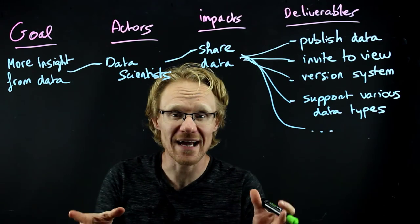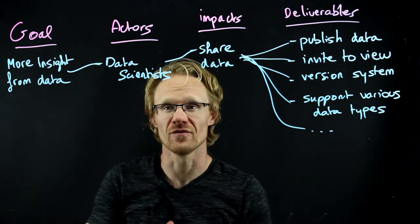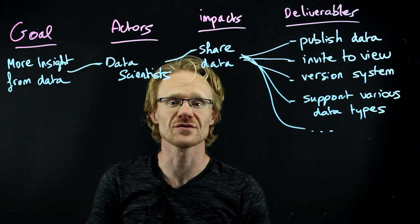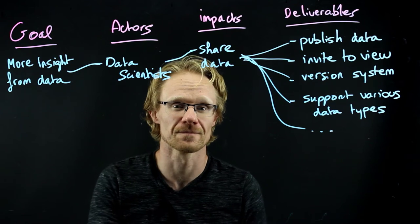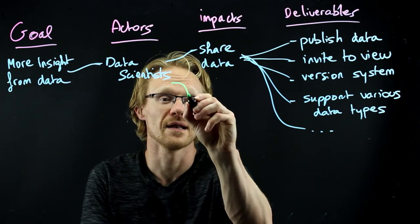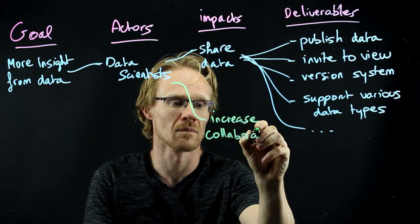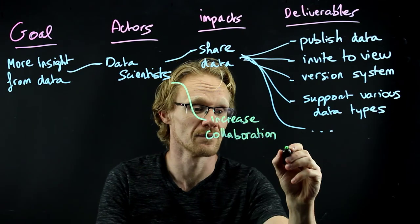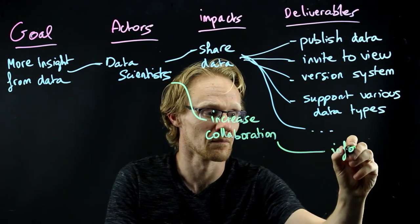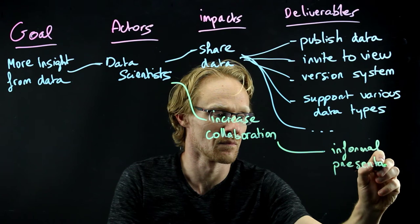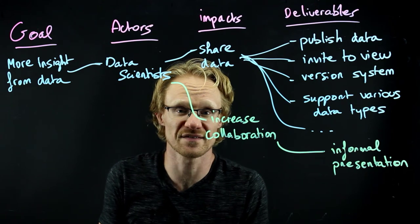Now that you know what your goal actually is, you can start brainstorming about different ways to get there. This is only just one option. So if you think about the same actors — the data scientists — what else could they do apart from sharing data? Sharing data is a good thing, but maybe not enough. You could think about getting them to increase collaboration, for example through informal presentations, or starting an open source library of tools useful for all the data scientists to share.